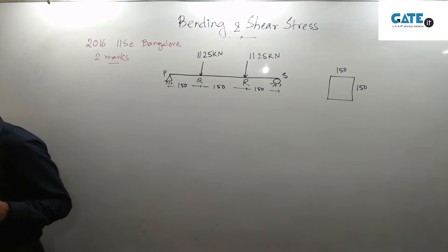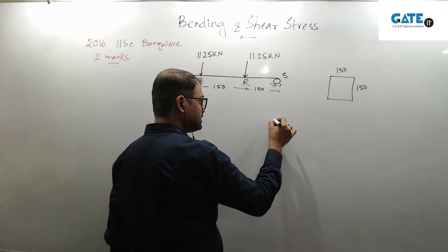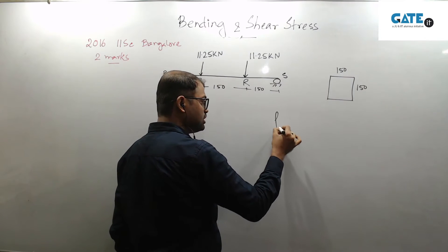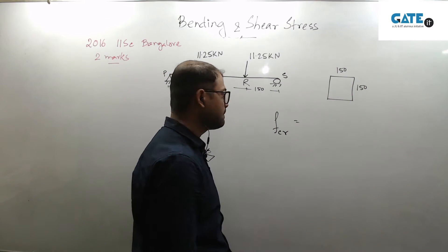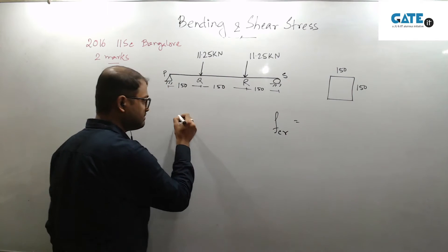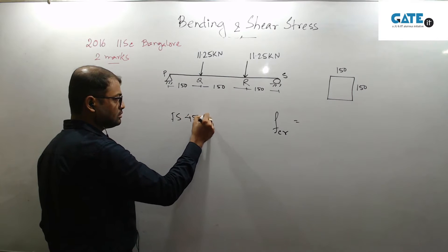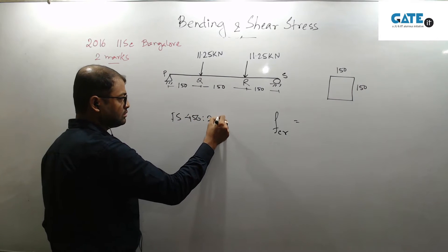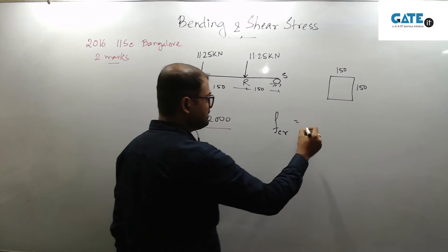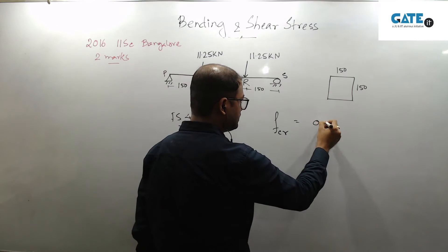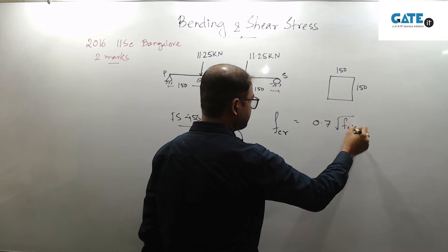Apart from this problem, what is modulus of rupture? As per IS 456-2000, modulus of rupture is given as 0.7 times root over fck.